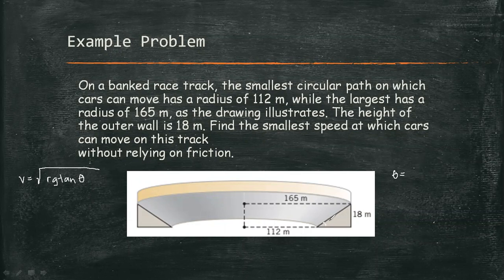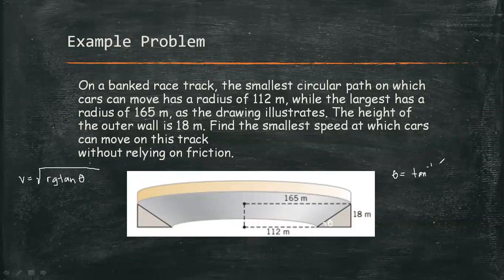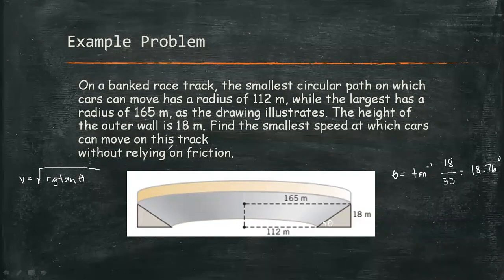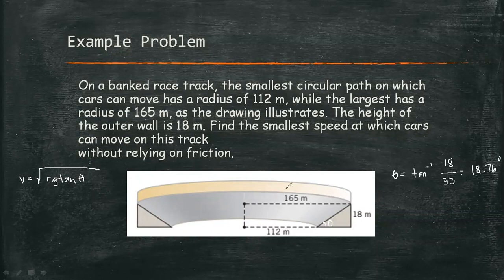So angle theta is equal to arc tangent of 18 meters over the difference between the radii, which is 53 meters. Therefore our angle is 18.76 degrees. And since we are looking for the smallest speed at which the car can move along this track, we will consider the smallest radius.